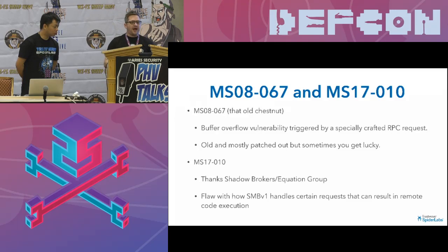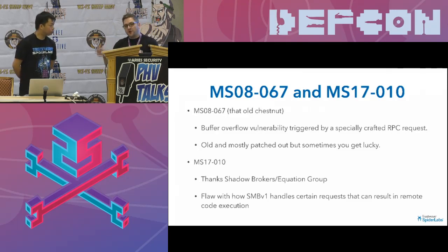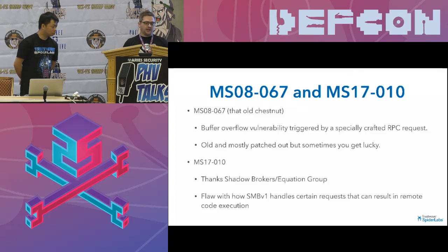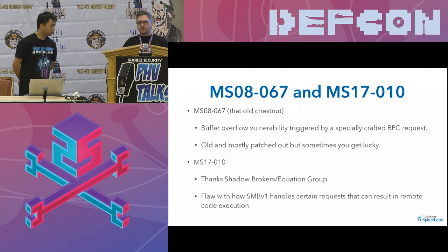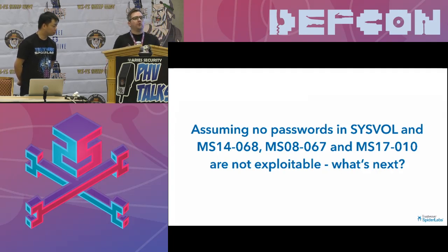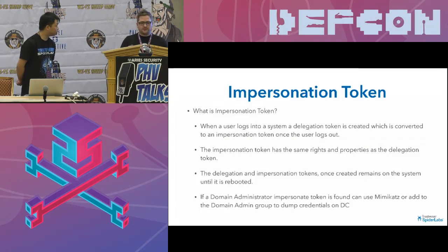If MS14068 is not successful, we try the classics — MS08067. It's an old one, mostly patched, but you never know your luck. And the more recent one, thanks to Shadow Brokers and the NSA allegedly, MS17010 — that's the SMB flaw that can also allow for remote code execution. If we get remote code execution on those boxes, then that's great. So assuming there's no passwords in SysVol and those vulnerabilities have been patched and are not exploitable, that's where we get to the impersonation token.